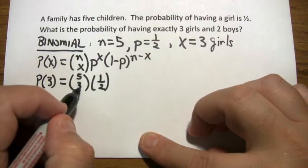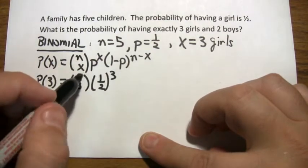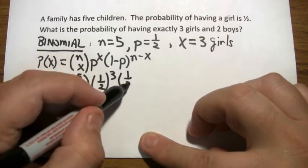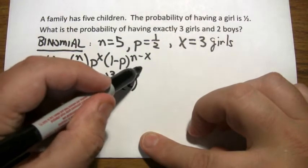The exponent of one-half is the three from the bottom part of the combination. Then you've got to say one minus one-half. One minus one-half is still one-half. And then you say five minus three and you get two.